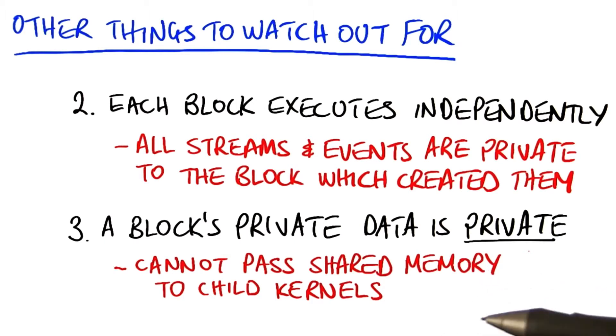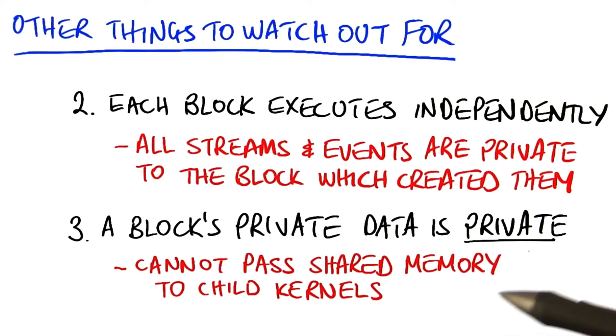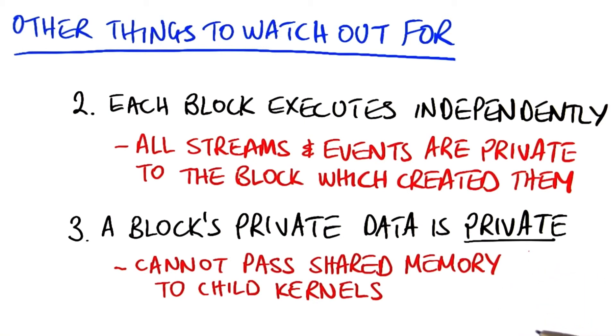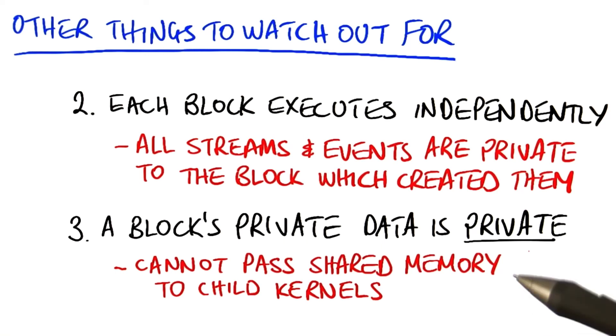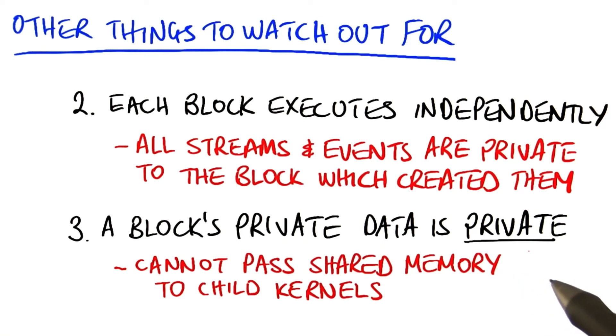Remember, your child kernel is another grid — it's other sets of blocks — and the first and most important rule is that all the blocks are considered independent programs. So no passing around of private data.